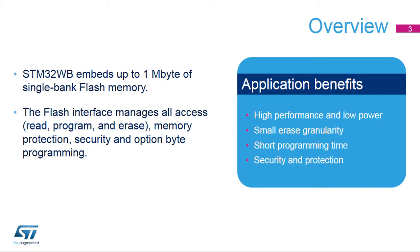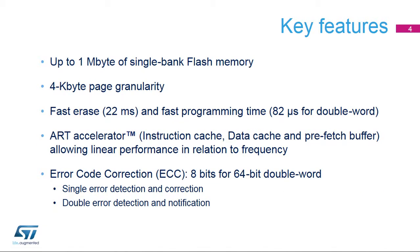The STM32WB Flash Memory provides various security and protection mechanisms for code and data, read, and write access. The STM32WB's flash memory has several key features. It has up to 1MB of single-bank flash memory. The erase granularity, corresponding to the page size, is only 4KB. A page, bank, or mass erase operation requires only 22 milliseconds.